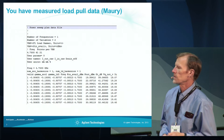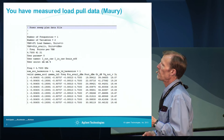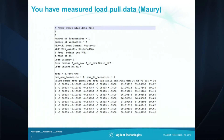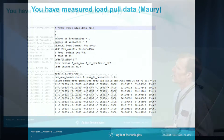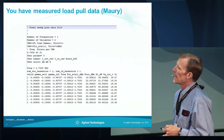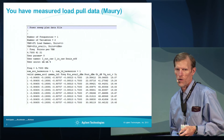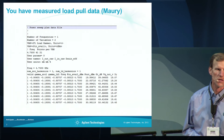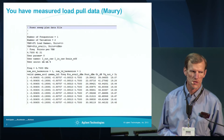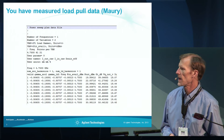This is a sample measured load-pull data from Maury, and it typically has data that's a function of frequency, bias conditions, and input power. There's various data that's in the file — it could be output power, gain, power added efficiency, intermodulation distortion, ACPR, things like that.